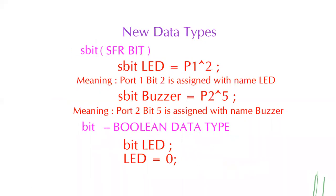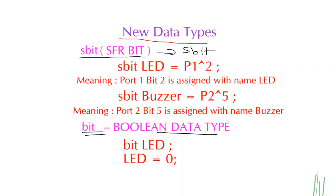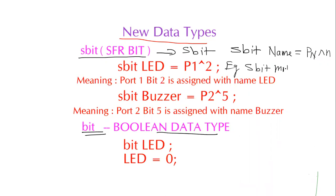There are also two single-bit data types. The third data type is SBIT — the SFR bit data type — used for assigning names to port pins. The syntax is: sbit <name> = Port<N>^<bit_number>. For example: sbit Motor = P2^2, where 2 refers to the port number and 2 refers to the pin number.